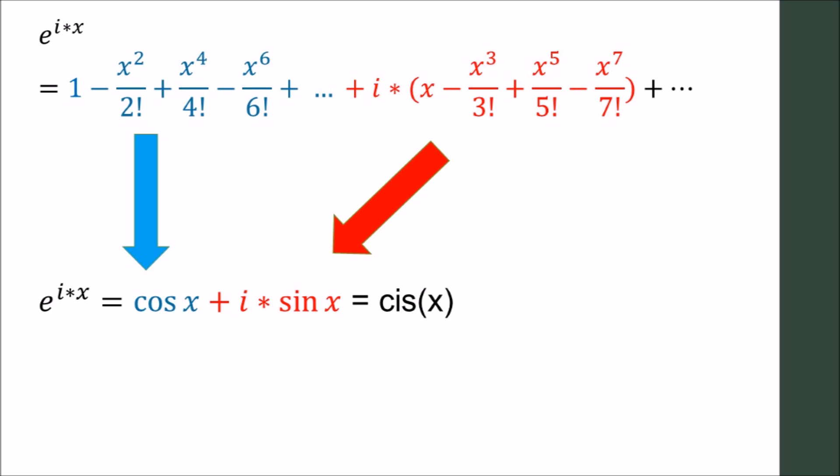Using the power series for both sine and cosine, we can simplify the expansion for e to the i times x. Hence, e to the i times x is equal to the cosine of x plus i times the sine of x. It is designated by Euler as the cis function.